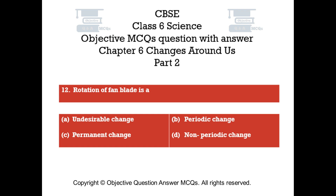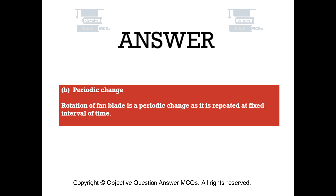Question number 12. Rotation of a fan blade is a — Option A: undesirable change. Option B: periodic change. Option C: permanent change. Option D: non-periodic change. The right answer is Option B: periodic change. Rotation of a fan blade is a periodic change, as it is repeated at fixed intervals of time.